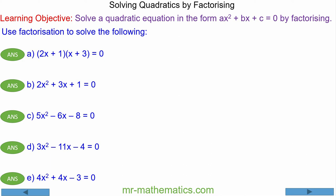In this lesson we're going to solve quadratics by factorising. For question a, the quadratic has already been factorised into two brackets: 2x plus 1 multiplied by x plus 3 equals 0.